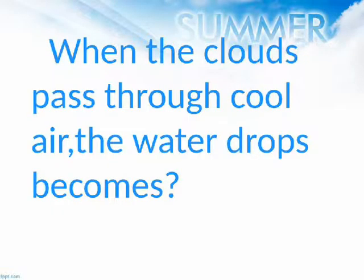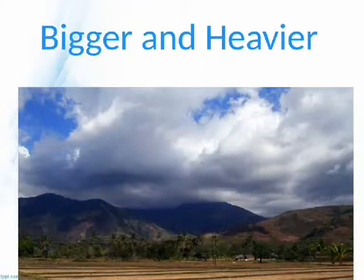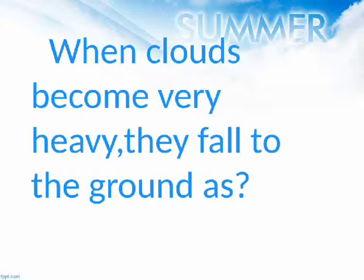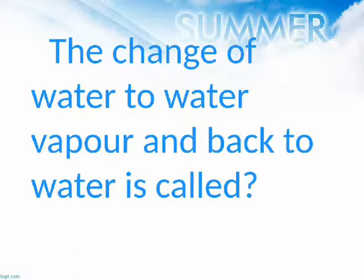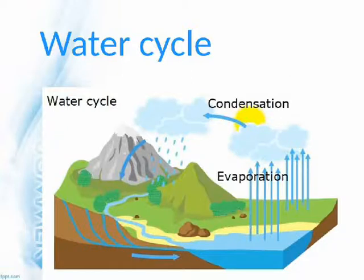When the clouds pass through cool air, the water drops become bigger and heavier. When clouds become very heavy, they fall to the ground as? Rain. The change of water to water vapor and back to water is called? Water cycle.